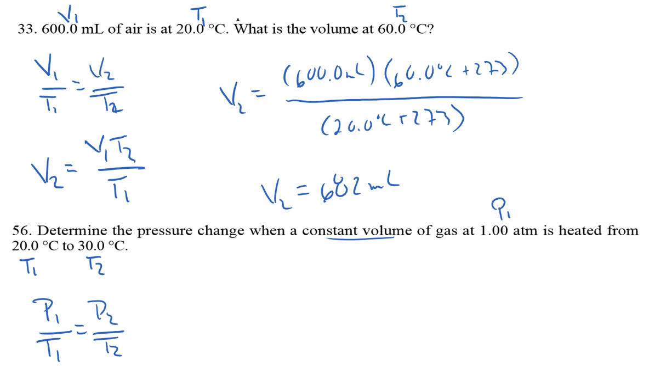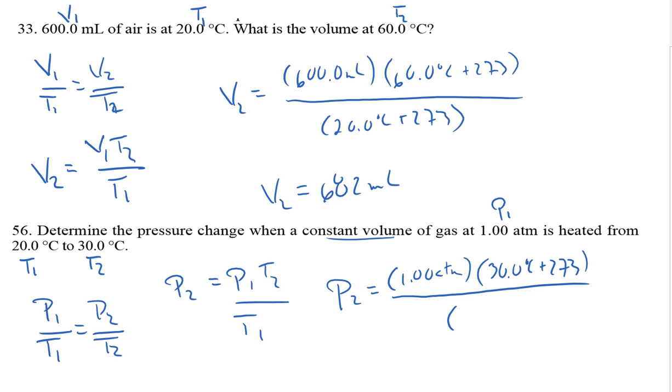I'm trying to look for a final pressure, so I'm going to isolate P2 as a variable. And then plug in some numbers. P2 is equal to my initial pressure, one atmosphere, times the final temperature, 30 degrees Celsius plus 273, divided by the initial temperature, which is 20 degrees Celsius plus 273. Units of temperature cancel, leaving with just a unit of pressure, and it works out to 1.03 atmospheres, which, as predicted with an increase in temperature, is also an increase in pressure.